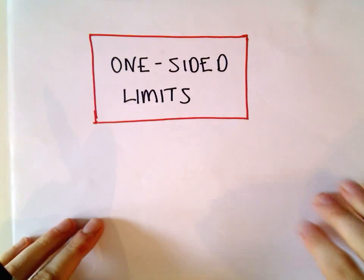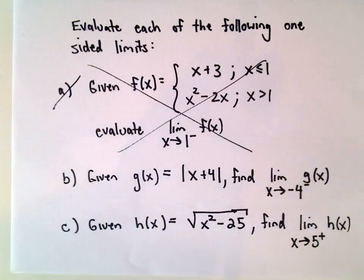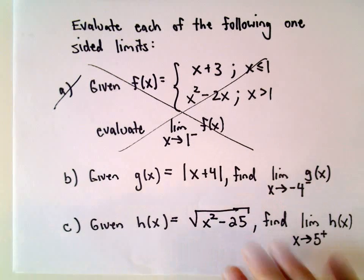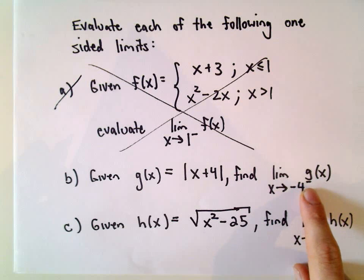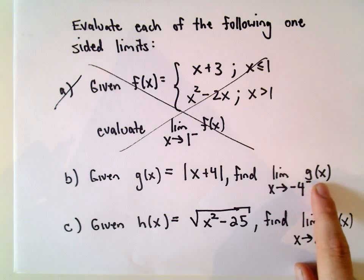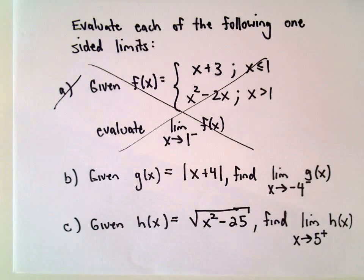All right, so another example here related to one-sided limits, and in this case we're going to do part B. We're going to look at the limit as x approaches negative 4 from the left of the function g(x), where g(x) is the absolute value of x plus 4.